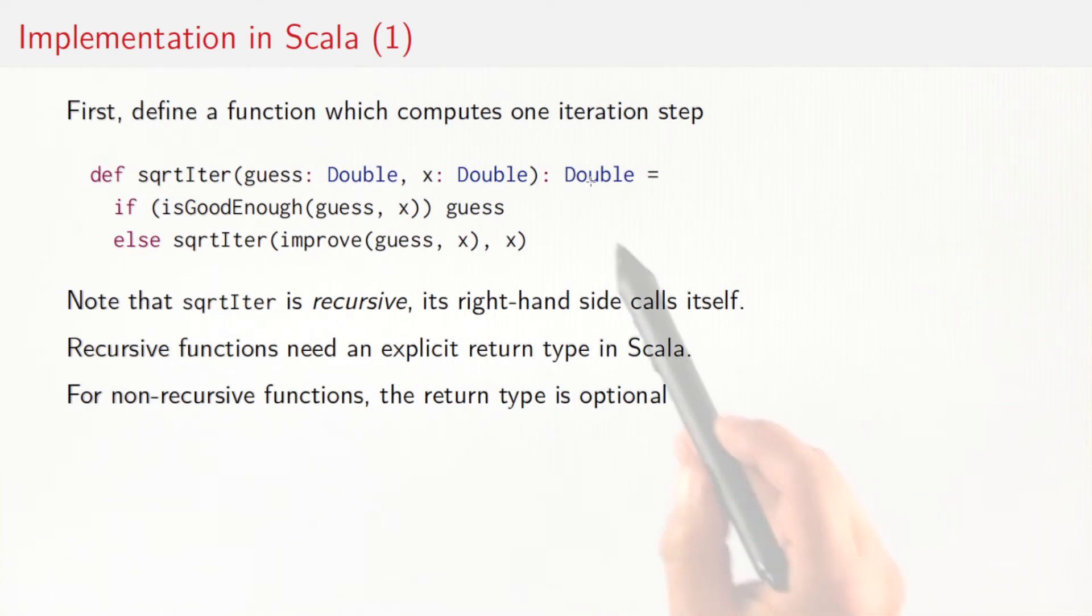One peculiarity in Scala is that the return type of a recursive function needs to be given always, whereas for other functions it's optional. The reason for that is that to compute that return type, the Scala compiler would have to look at the right-hand side. And because the square root iter function is recursive, it's stuck in a cycle. It would need the return type for that to compute the type for the expression. To break the cycle, we require that recursive functions always have explicit return types. It actually makes sense even for other publicly used functions to give an explicit return type because that's good documentation, but it's not required by the language.